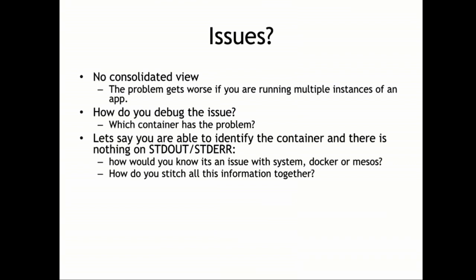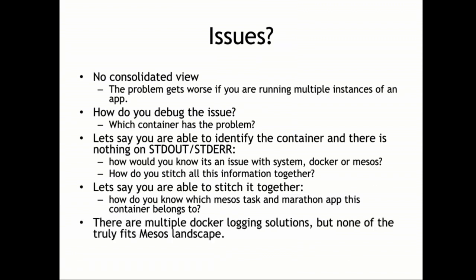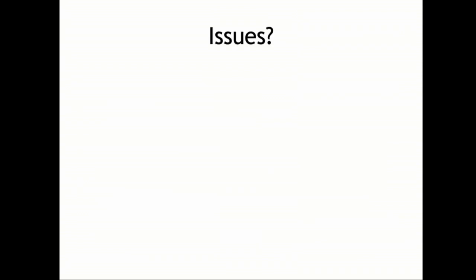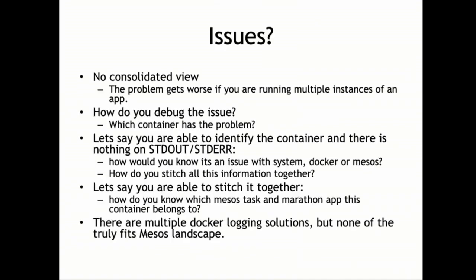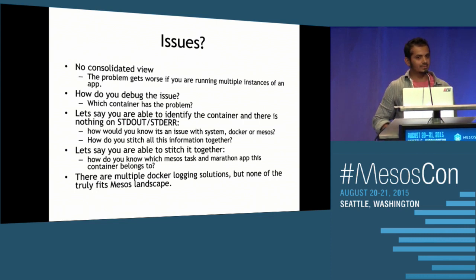How do you basically stitch all this information together — whether it is relating to the host, the system, Docker logs, or Mesos logs? Let's say you are able to stitch it together and you identify that this container has an issue. But now how do you map that container to a Mesos task ID and a particular Marathon app? This is a genuine issue for us. There are multiple Docker solutions available, but none of them truly fits the Mesos landscape.